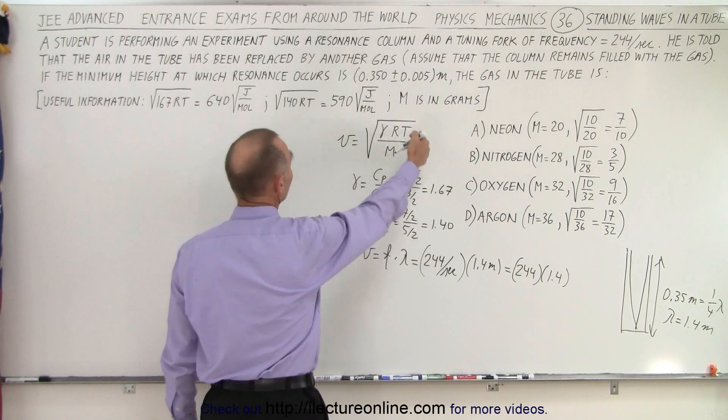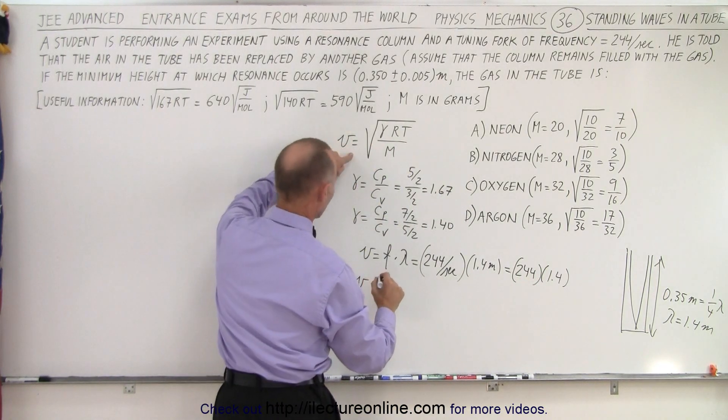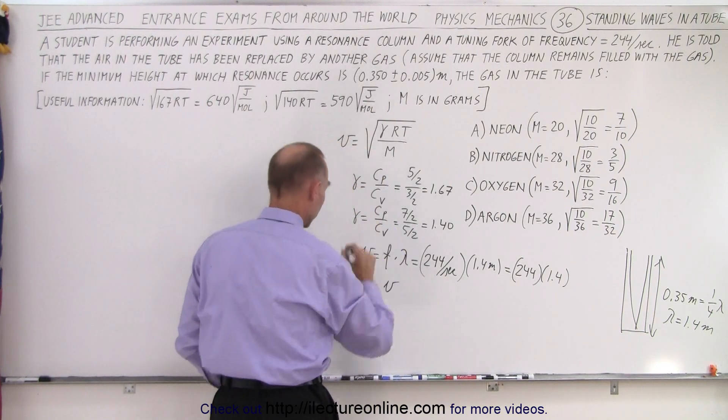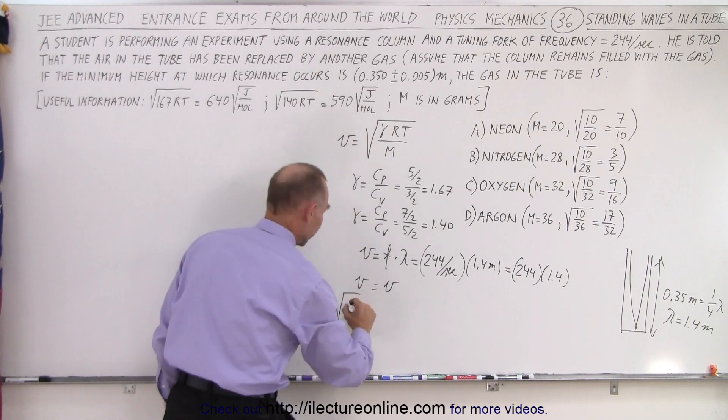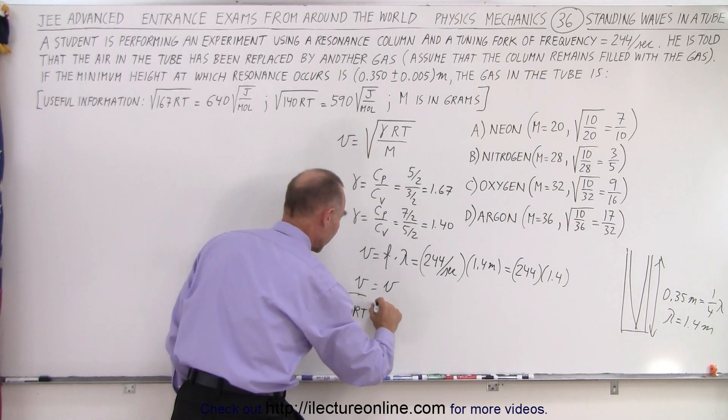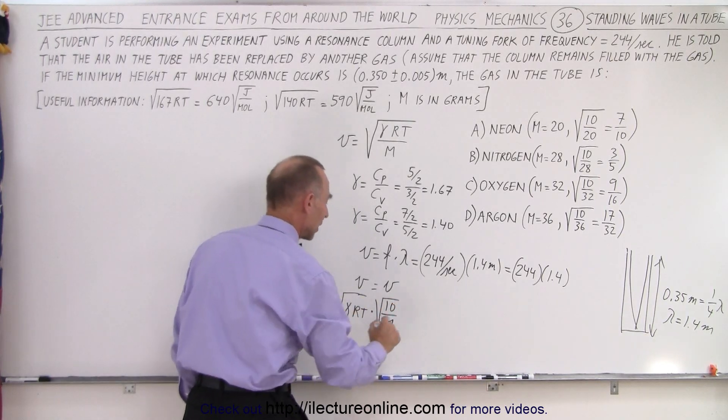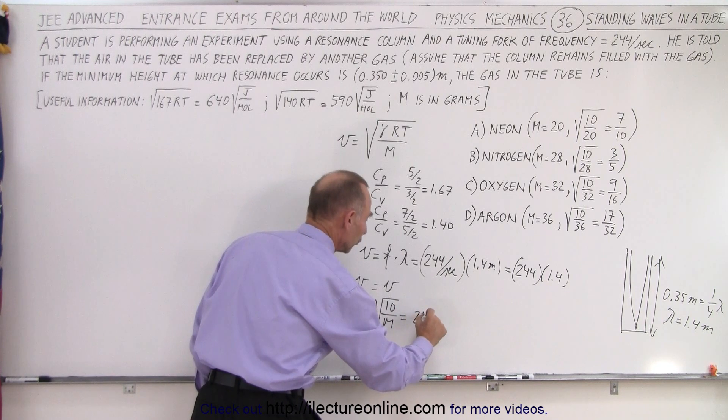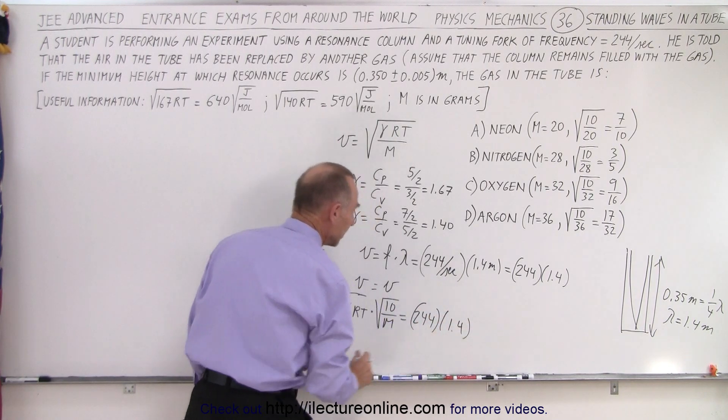We also have this equation for the velocity. So we could say that velocity using this equation equals the velocity using that equation. The square root of gamma times R times T multiplied times the square root of 10 divided by the molar mass in grams is equal to 244 times 1.4.